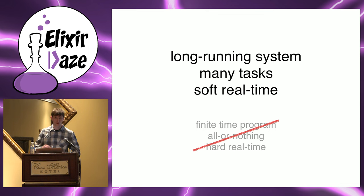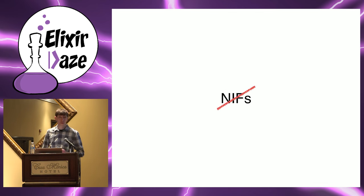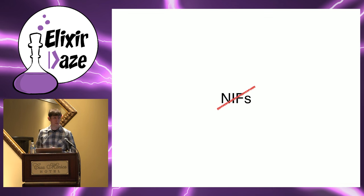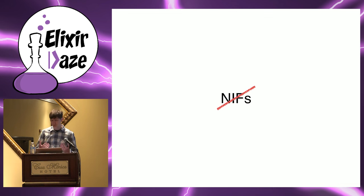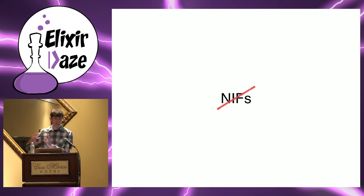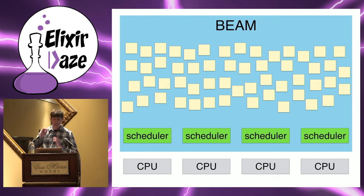I'm going to cherry-pick a few examples and explain why they're relevant for this class of software. For the purpose of this talk, I'm going to assume that the thing called NIF does not exist. NIF stands for native implemented functions — a mechanism that lets you write custom native code in C, C++, or Rust and run it directly in the BEAM operating system process. When you do that, all the guarantees are off: you can crash your entire system, paralyze it, leak memory. So whenever I say something is guaranteed or cannot happen, this isn't true if you bring NIFs into the equation.